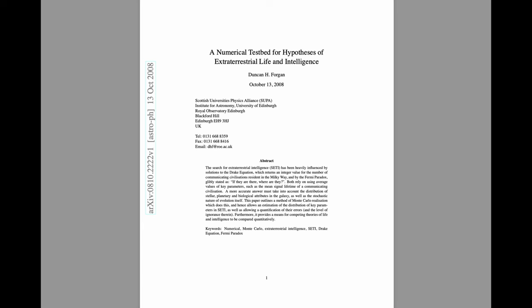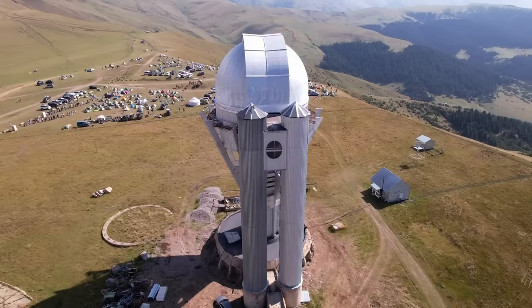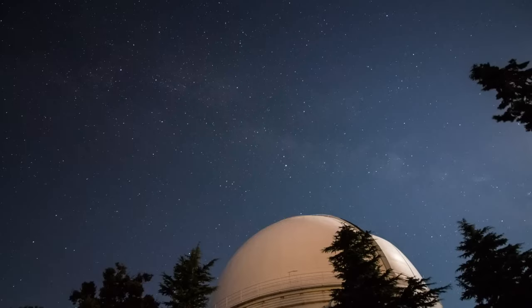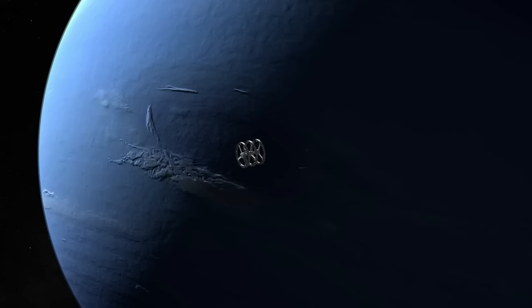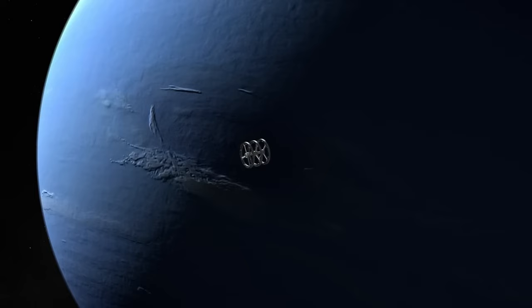Moltiplicando tutti i fattori della formula di Drake però si ottiene un valore per N cioè di possibili civiltà avanzate intelligenti che va da un minimo di circa 10 alla meno 7 a un massimo di circa 10 alla sesta. Questo significa che solo nella nostra galassia potrebbero esserci da meno di una, cioè noi, ovvero un valore assai irrealistico per non dire impossibile, a più di un milione di civiltà esterne al nostro pianeta.